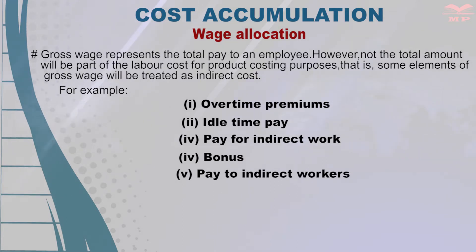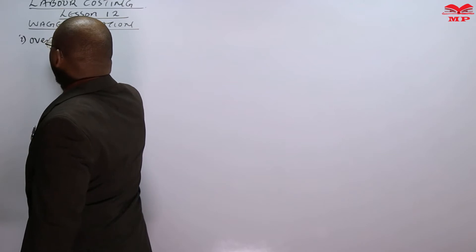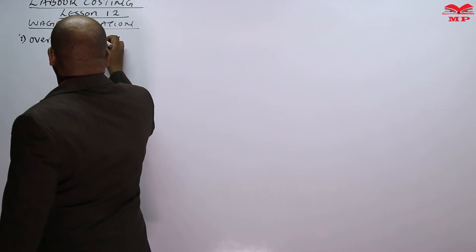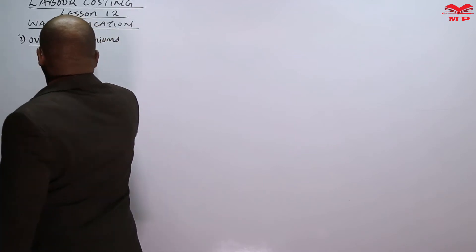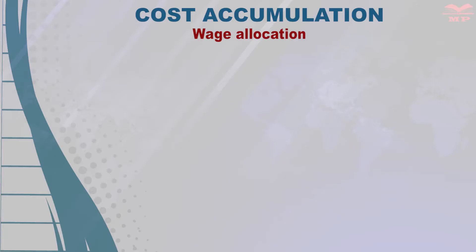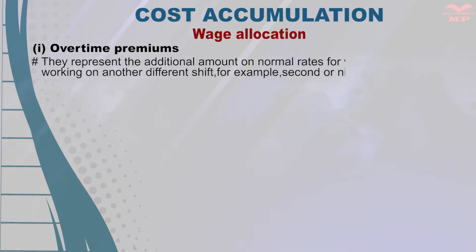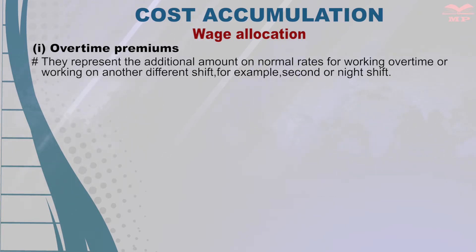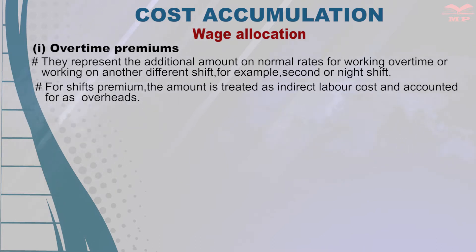Looking at the first item: overtime premiums. These represent the additional amounts on normal rates for working overtime or working on different shifts — for example, a second shift or night shift. For shift premiums, the amount is treated as indirect labor cost and accounted for as overheads. These are just normal shifts, so the premium is taken to be indirect labor.